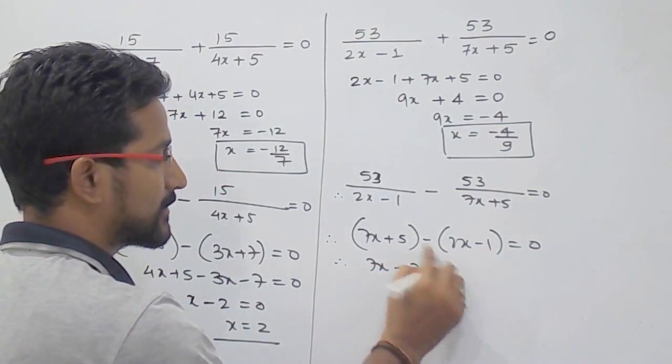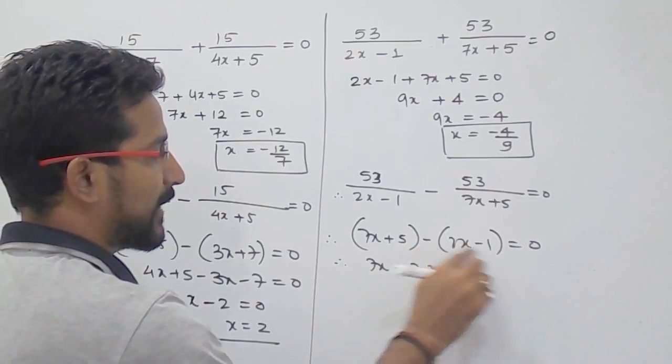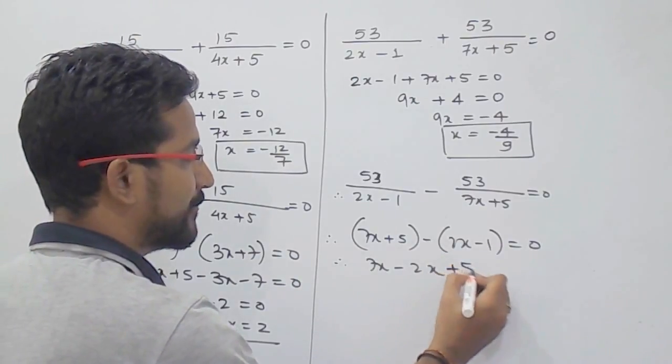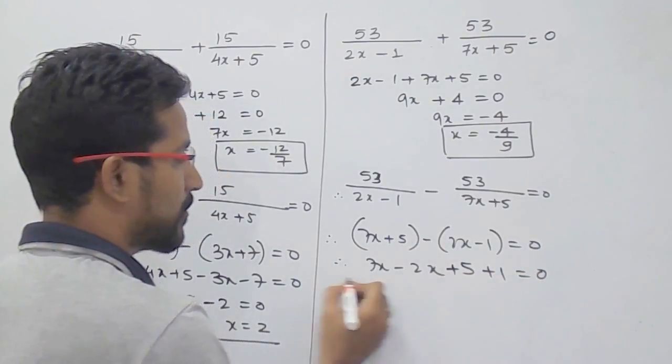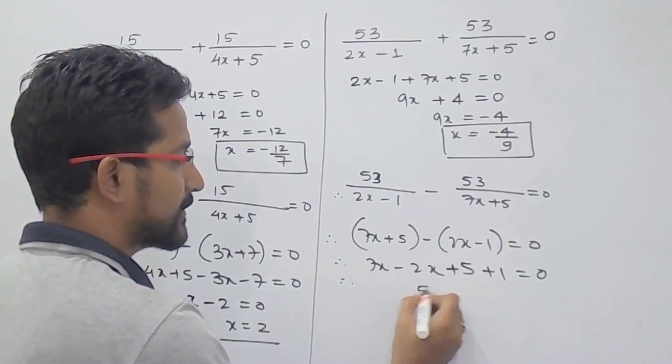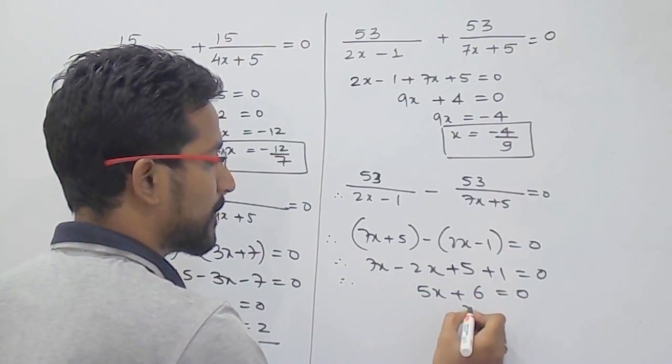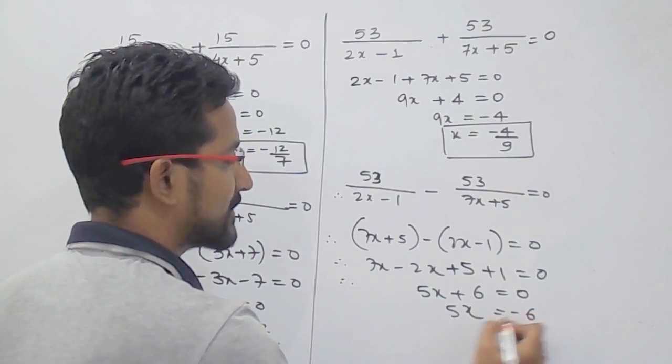So 7x minus 2x, it will be 5x, and minus minus plus, so it will be 5 plus 1 equals 0. So it will be 5x plus 6 equals 0, so 5x equals minus 6.